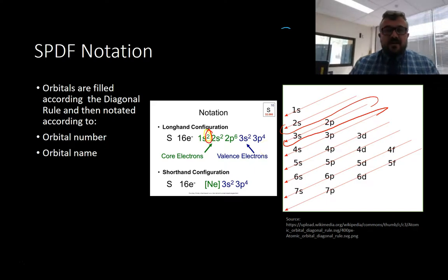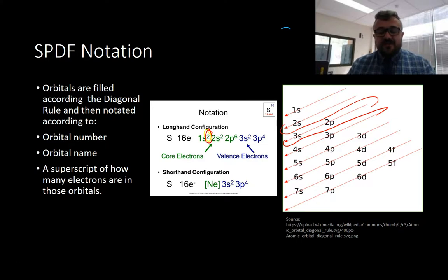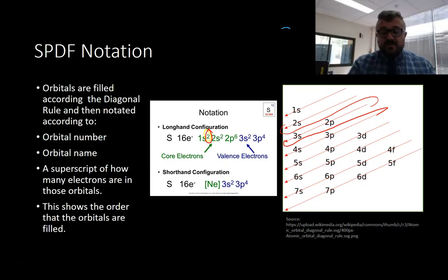That can get really long. Sulfur's only element 16. By the time we get further down the list, it becomes really full. These are our core electrons, and these are our valence electrons. We can find the nearest noble gas, which is neon. We put that in brackets because it has all the core shells and core electrons the same as neon. So it's neon's SPDF notation plus 3S2, 3P4. The superscript says how many electrons are in those orbitals and shows the order that orbitals are filled.